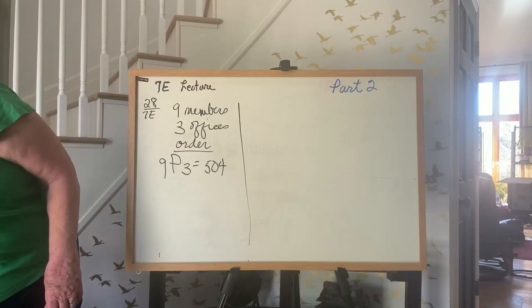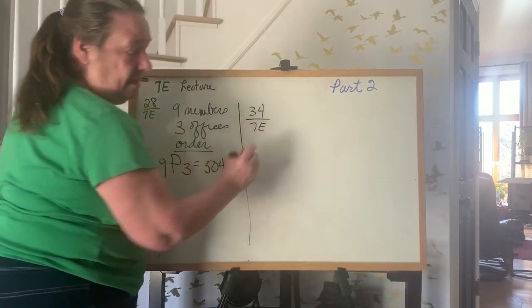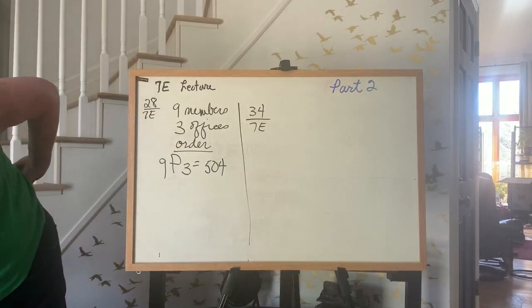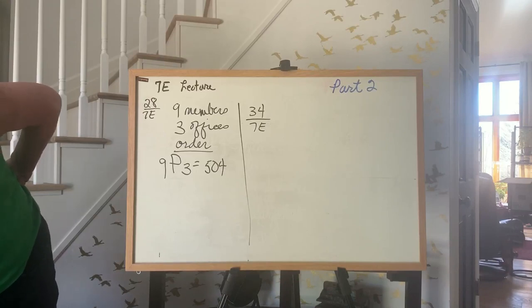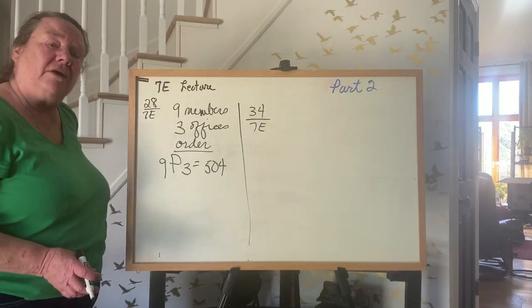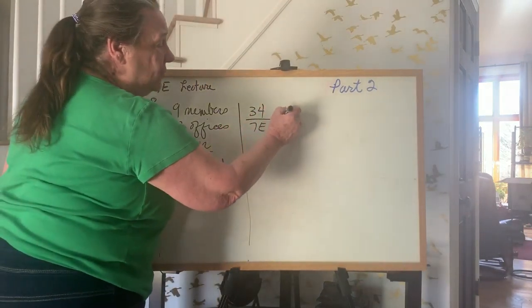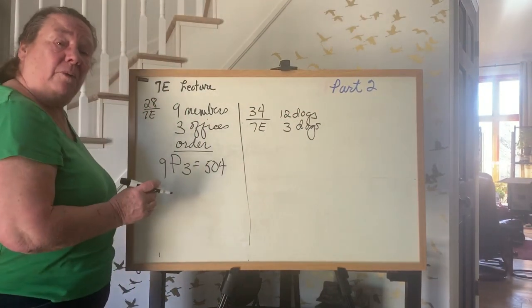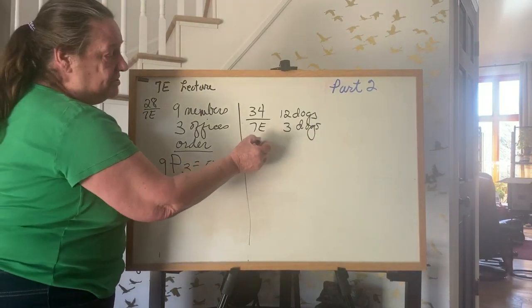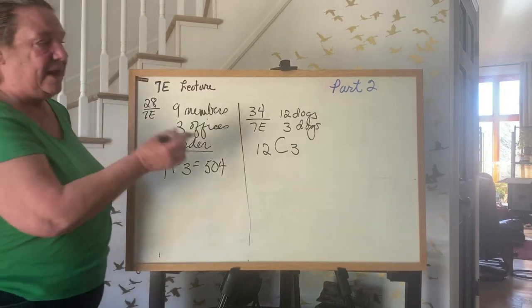The next problem I'm going to do is number 34 on 7E. 34 says, a dog shelter is giving away 12 different dogs, but you have room for only three. How many different dog families could you have? So there's 12 dogs. You can have three of them. It doesn't say anything about the lead dog or the top dog or anything like that. You have 12 dogs. You want three of them. Is this a combination or a permutation? It's a combination. So you say 12 combined, three at a time. Very simple.